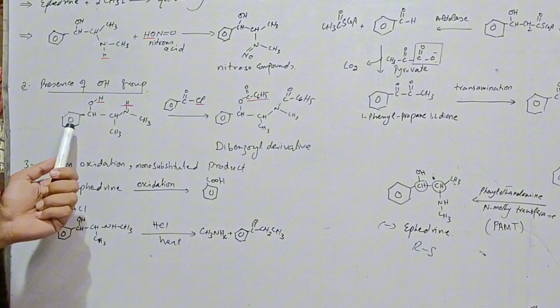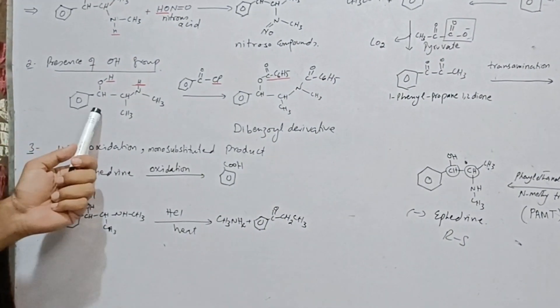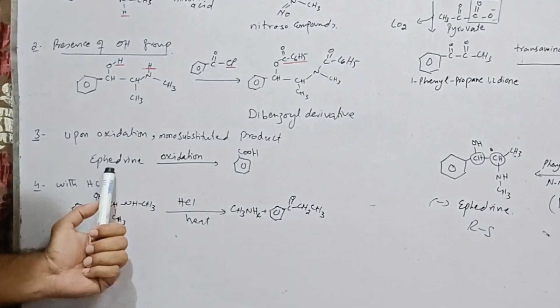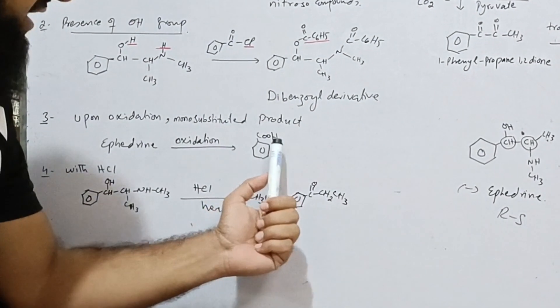So to find that whether there is another group present on the ring or not, we do oxidation of ephedrine.